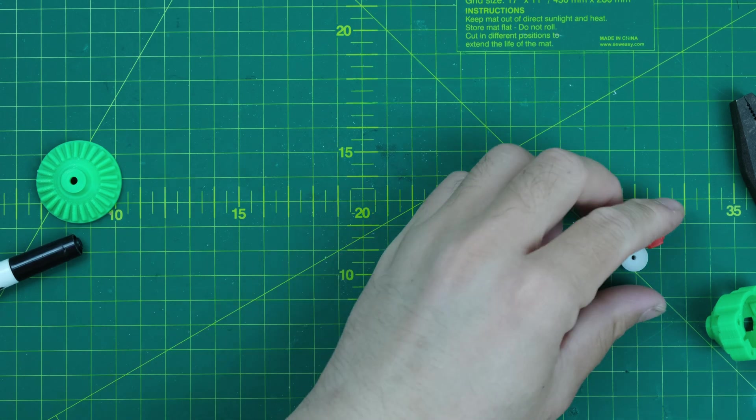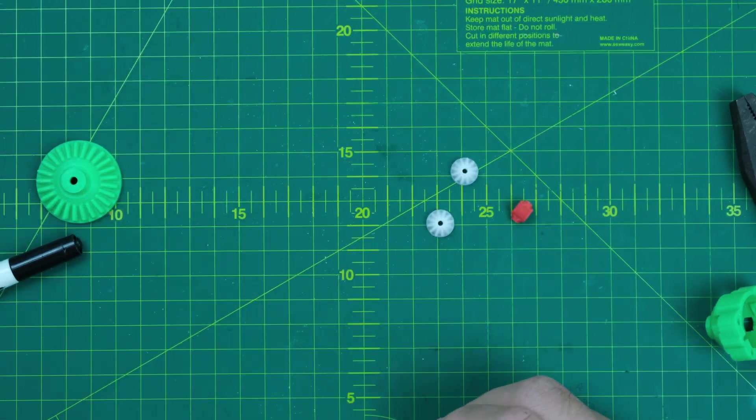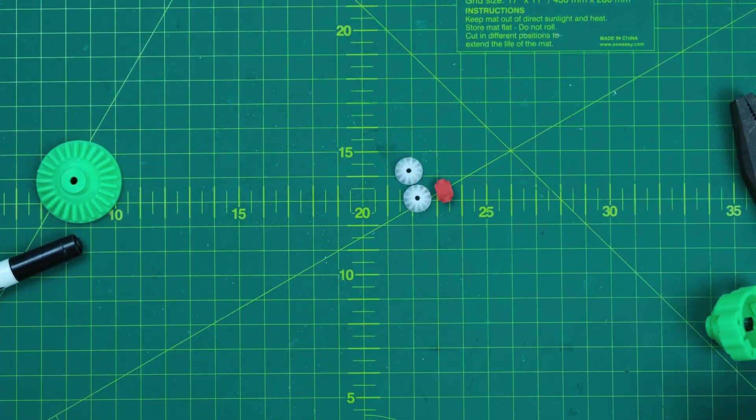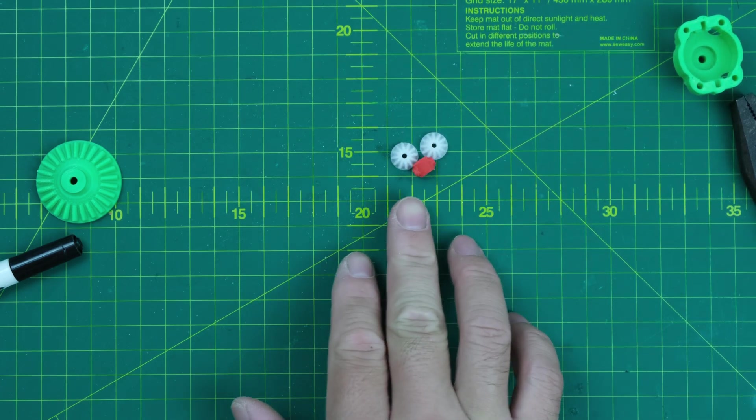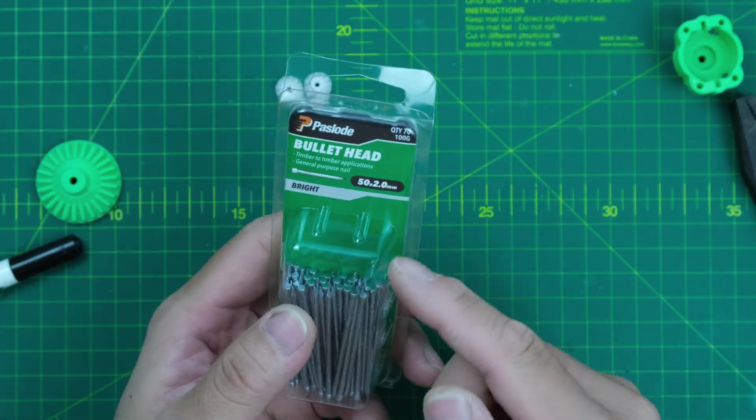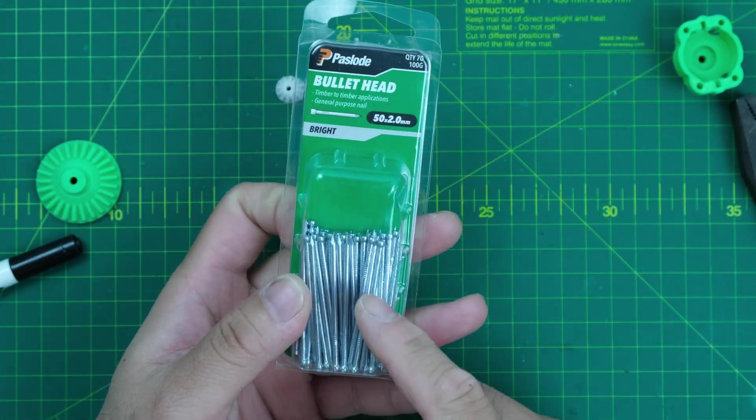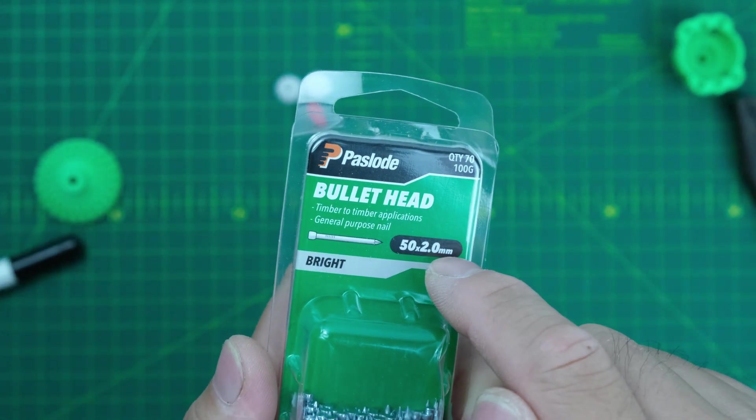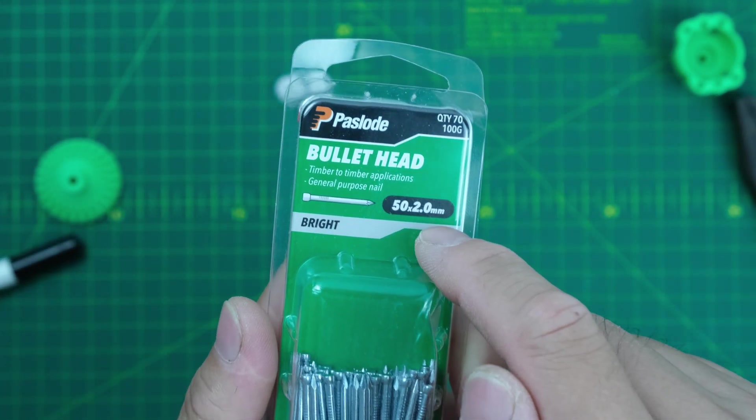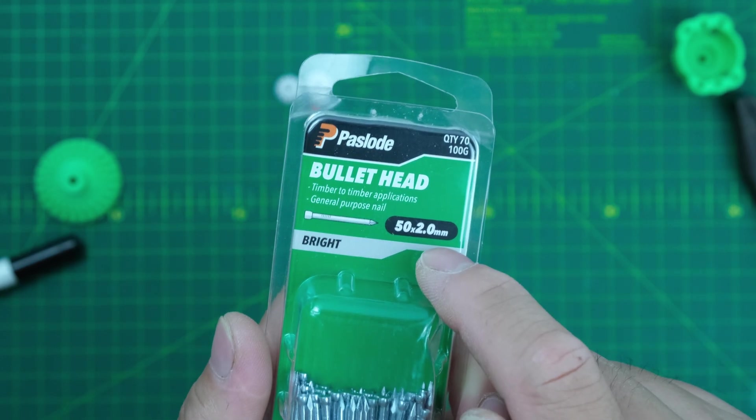The next step is we're gonna assemble the pinion gears. This set is very easy to do. This is 3D printed parts. The only thing you need to look after is this, the shaft. I bought this one. You can read from the package, the diameter is 2mm. This one is very important.